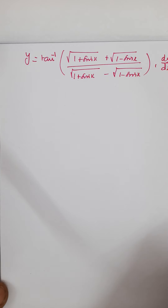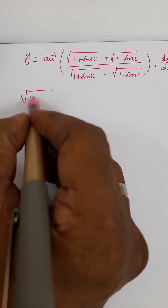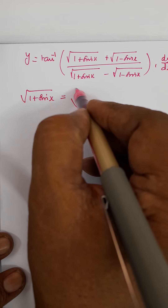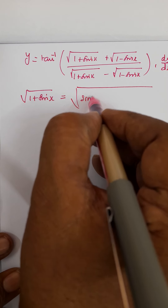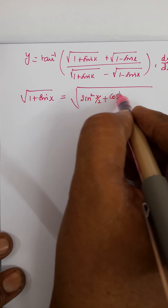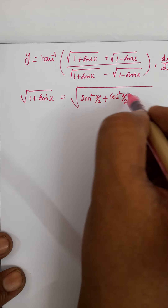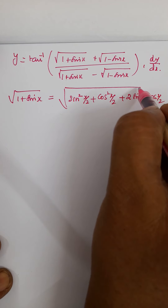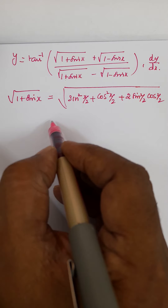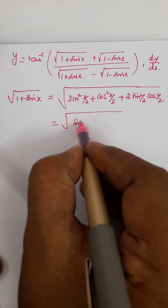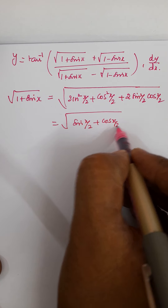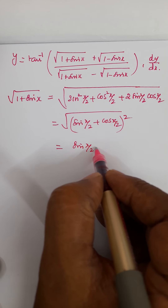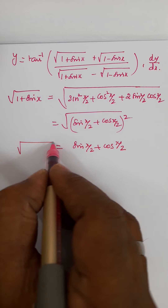Now, let us simplify. Root of 1 plus sin x: note that 1 plus sin x equals sin squared x by 2 plus cos squared x by 2 plus 2 sin x by 2 cos x by 2, which can be written as root of sin x by 2 plus cos x by 2 whole squared, because of the a plus b whole square identity. So root of 1 plus sin x equals sin x by 2 plus cos x by 2.